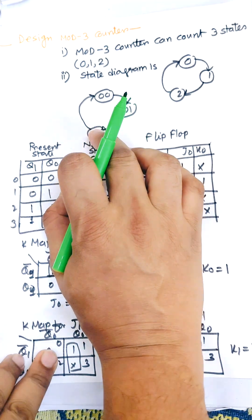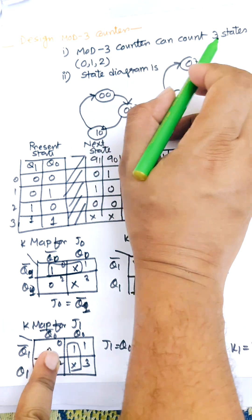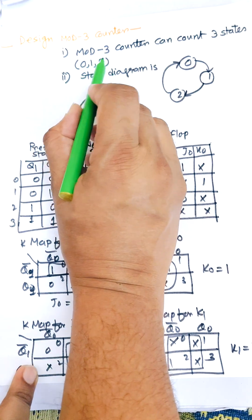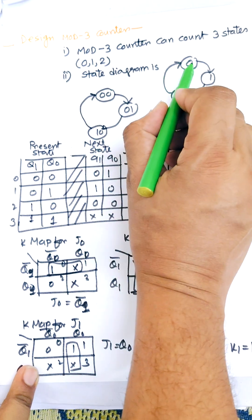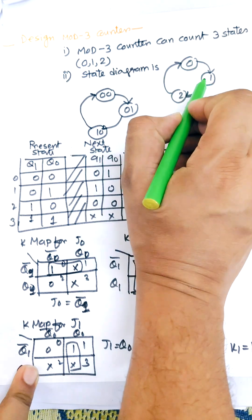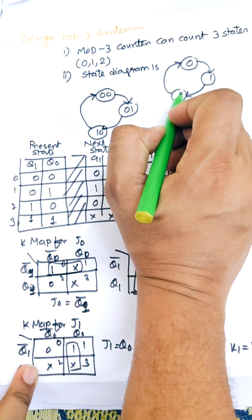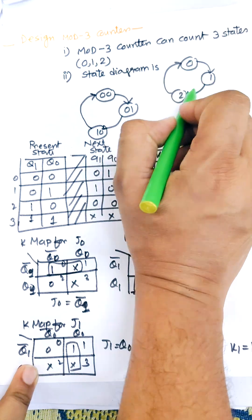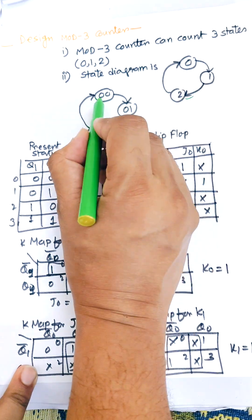In this video, I am going to design a mod 3 counter. A mod 3 counter can count 3 states: 0, 1, and 2. The state diagram shows that if the present state is 0, the next state will be 1; if the present state is 1, the next state will be 2; and if the present state is 2, the next state will be 0.